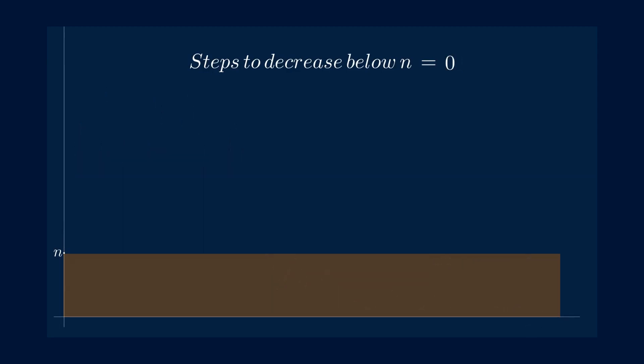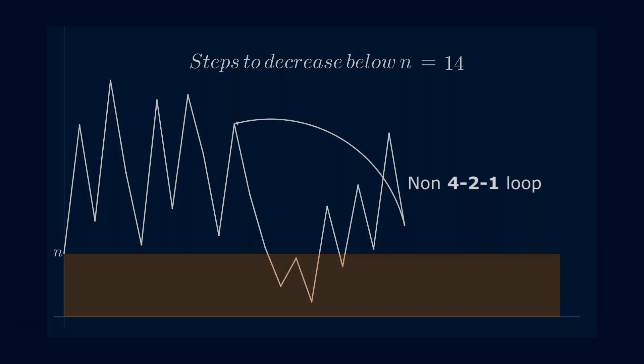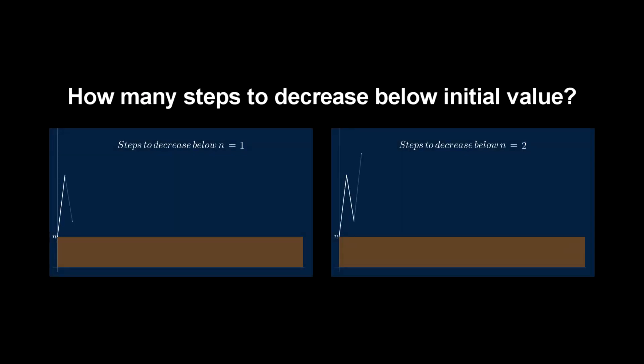However, it is conceivable that a starting integer n drops down below n, then rises exactly to a value in the sequence forming a non-4-2-1 cycle, hence disproving the conjecture. But again, I wanted to simplify the problem to analyze some of the patterns instead of focusing on a rigorous proof.